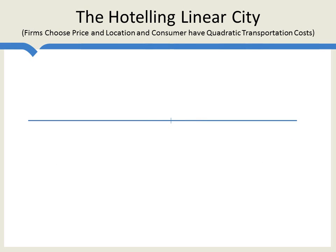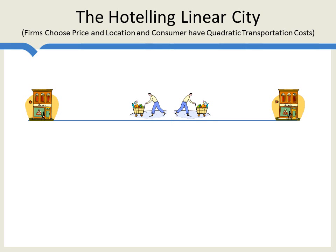So far, we've only looked at the model where prices are fixed. More generally, we want to look at a model where the firms choose both prices and locations. To do this properly, we need to specify what is the cost to consumers of traveling to their closest store. We're going to make the assumption that consumers have quadratic transportation costs. This simply means that the cost of walking to the nearest store increases the farther away the store is, and it increases at an increasing rate. We might also interpret this as the cost to the consumer of moving away from their ideal preference point, where utility decreases in a quadratic way.